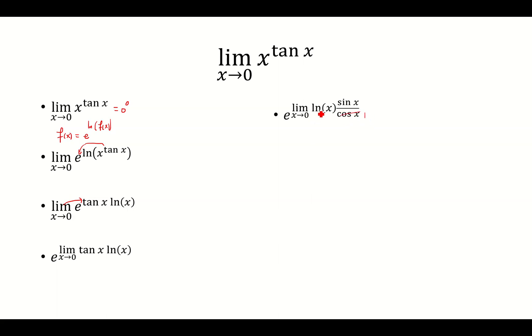So this is just ln of x times sine of x, which is still going to be negative infinity times 0. So what we're going to do is bring the sine all the way to the denominator. So sine will be 1 over 1 over sine.